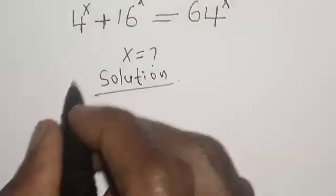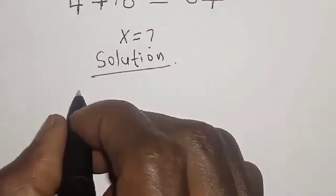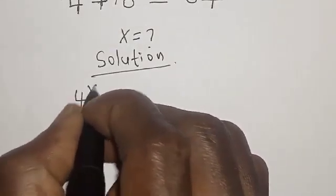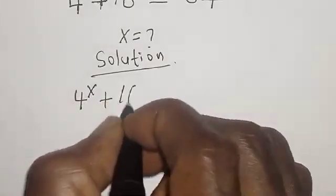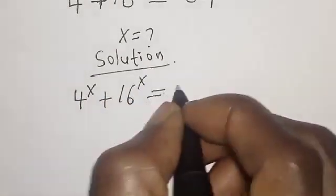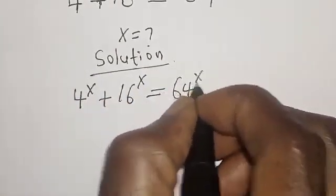Solution. The equation given is 4 raised to power s plus 16 raised to power s is equal to 64 raised to power x.